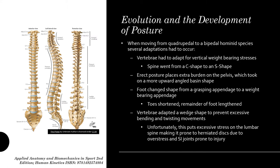Posture is typically how we hold our body in an upright position, but we weren't always upright creatures — posture had to develop as we evolved as a species. When we moved from quadrupeds to a bipedal hominid species, a couple of adaptations had to occur. First, our vertebrae had to adapt for vertical weight-bearing stresses.